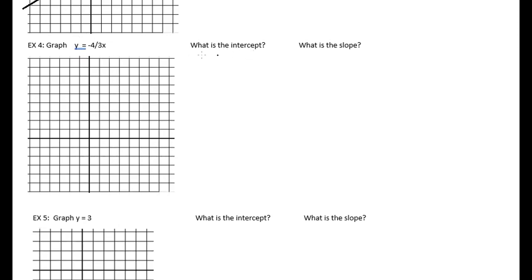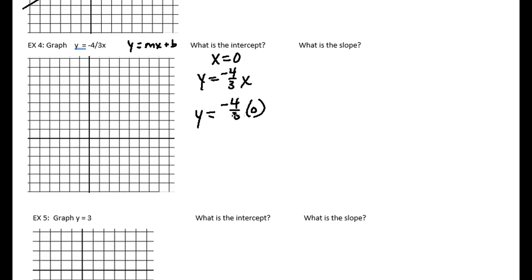For the equation y equals negative four-thirds x, what is our intercept? I don't see a b, so I plug in zero for x. Negative four-thirds times zero equals zero, so y equals zero. My intercept is at the origin (0, 0). The equation could be written as y equals negative four-thirds x plus zero. So it just means it crosses at the origin — not that there's no intercept, just that it is at zero.